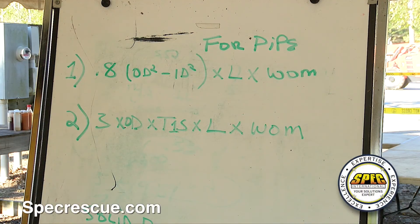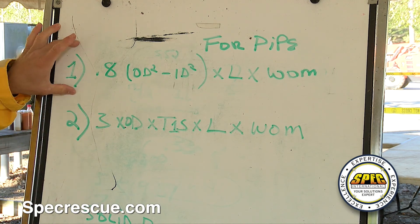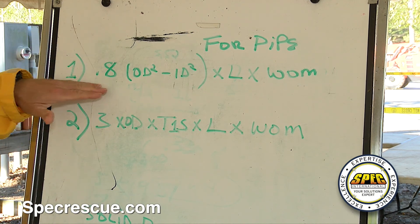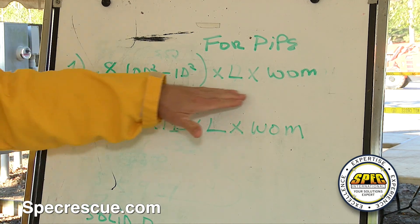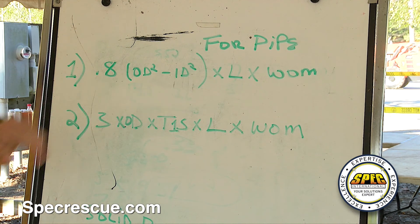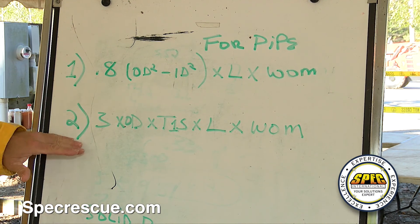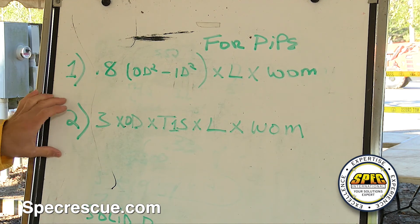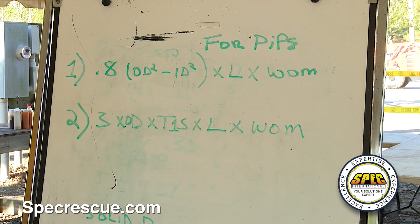For the Structural Collapse Specialist course, this is a formula that the FEMA engineers use to calculate pipe. The second one is used for field calculations.